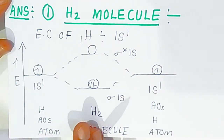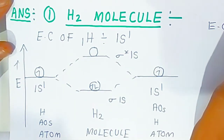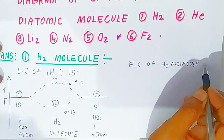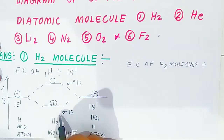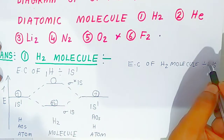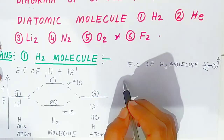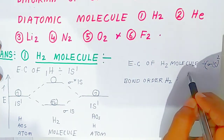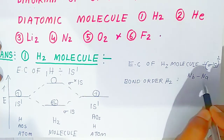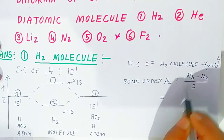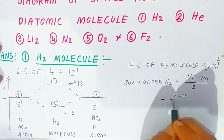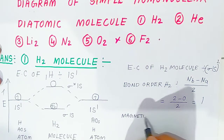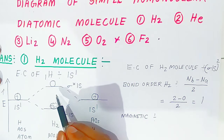From the molecular orbital diagram, we can write the electronic configuration of the hydrogen molecule (H₂): σ1s². For bond order, the formula is: (number of bonding electrons minus number of antibonding electrons) divided by 2. Bonding electrons = 2, antibonding electrons = 0, so bond order = (2 − 0) / 2 = 1. This means hydrogen has a single bond.